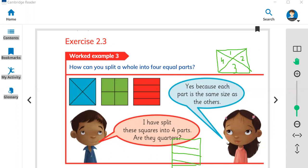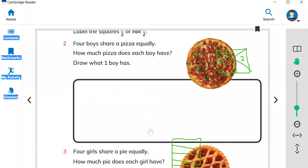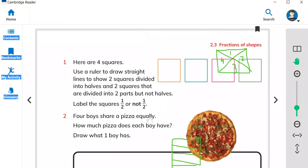Let's move to the first question. Here is the first question. You have to look, here are four squares. Can you see four squares? You have to use a ruler to draw straight lines to show halves.